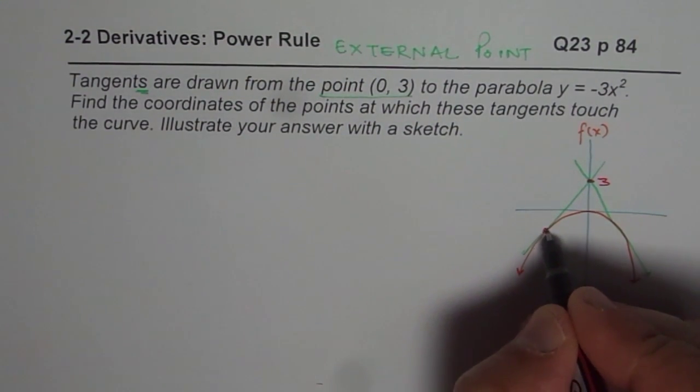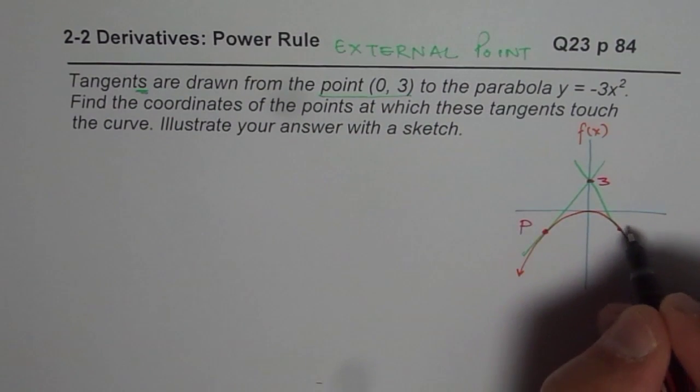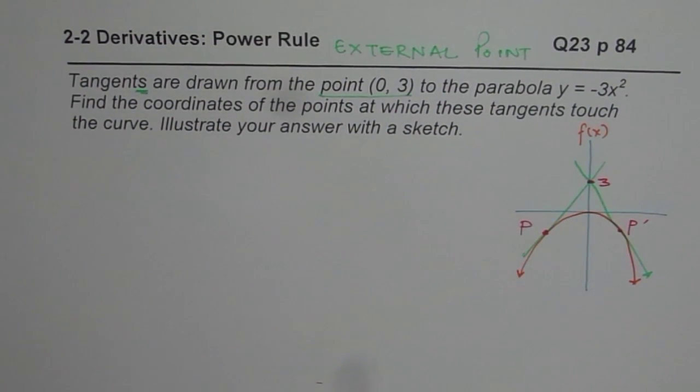The question is, we need to find these points. So what are these points? That is what we need to find. Let's say these points are P and P'. They are kind of symmetrical, as you can see from the figure. But let's try to find out what these points are.